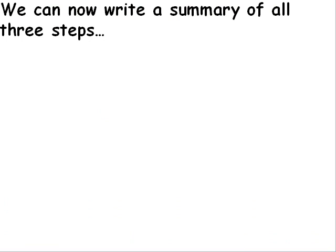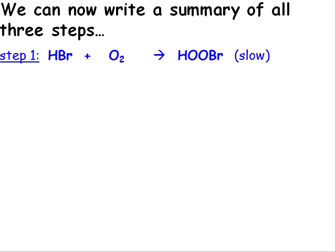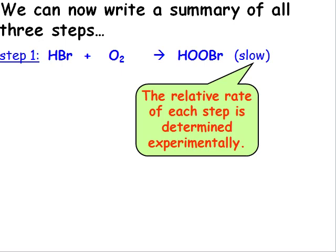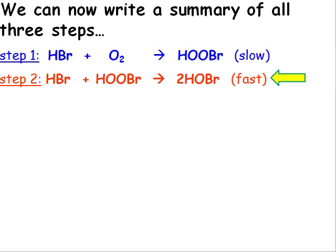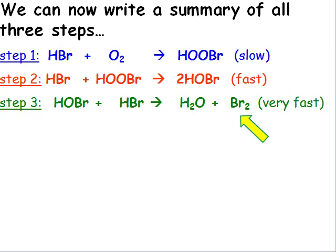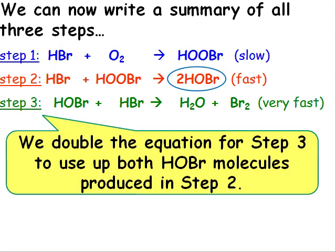We can now write a summary of all three steps. Step 1 is slow. How do we know that? Well, the relative rates of each of the steps has been determined experimentally. Step 2 is found to be fast, and step 3 is found to be very fast. We double step 3 to use up both HOBr molecules produced in step 2.